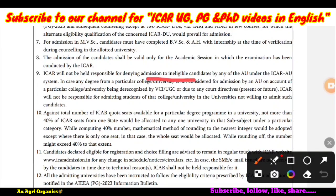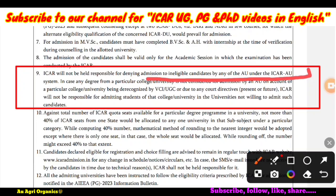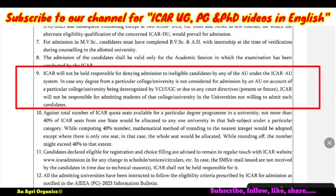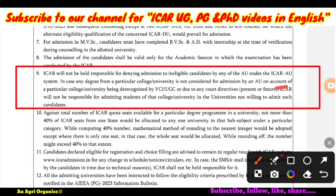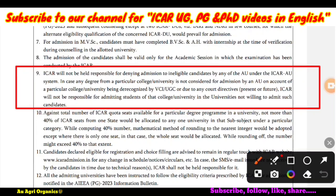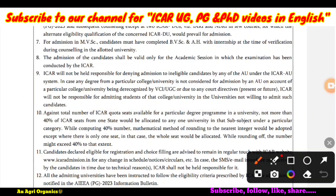ICAR will not be held responsible for denying admission to ineligible candidates by any of the agriculture universities under the ICAR-EU system. In case any degree from a particular college or university is not considered for admission by the AU on account of that college being de-recognized by VCI or UGC, or due to court directives, ICAR will not be responsible. If your UG degree was from a de-recognized institution, you may not be able to get admission at a new university, so you must take care of this.